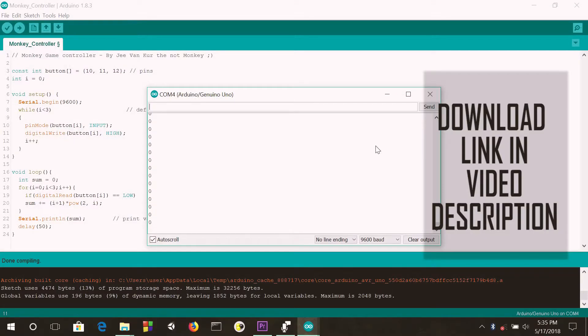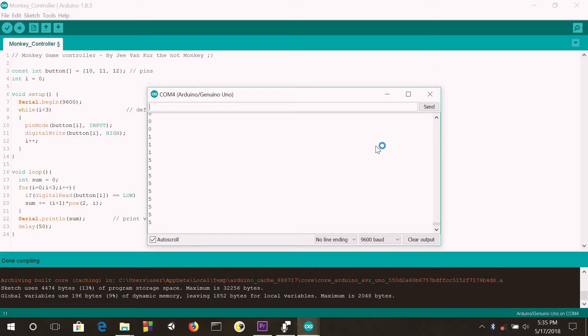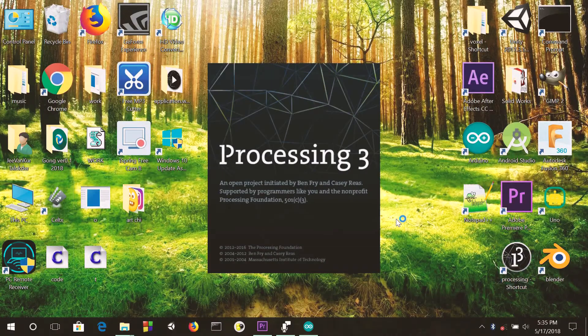If I press the left and the central button, I should get the sum as 5. And here we go. So the Arduino is talking well with the serial monitor. Now, let's switch on Processing and start coding again.